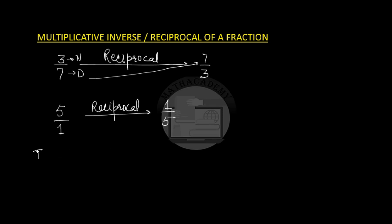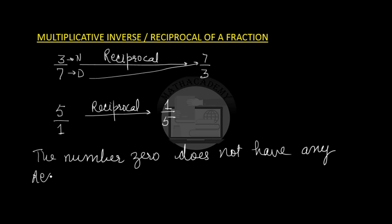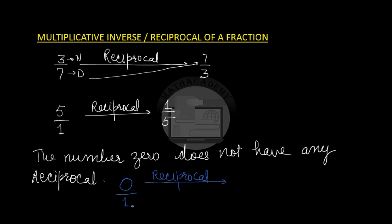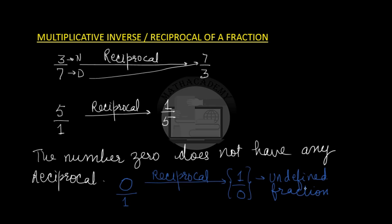The number 0 does not have any reciprocal or multiplicative inverse. Let us see why. If we take the number 0 and want to find its multiplicative inverse or reciprocal, 0 can be written as 0 over 1. Any integer can be written in fraction form as that integer divided by 1, and when we swap the numerator and denominator we get 1 over 0. There is no fraction defined with the denominator 0, so this gives us an undefined fraction, and therefore 0 does not have a reciprocal.